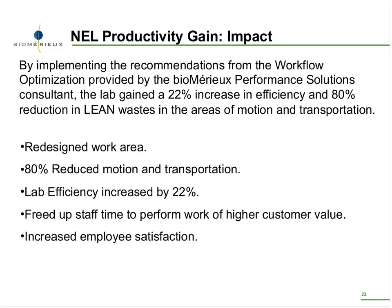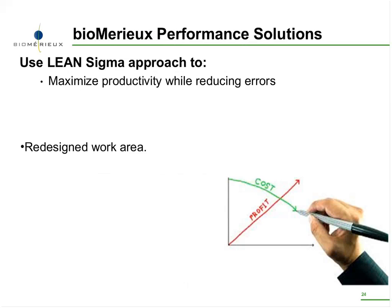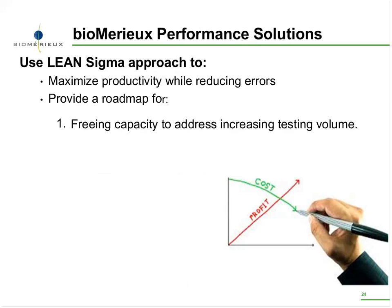When we did a follow-up assessment after a couple of months, we were able to see a 22% increase in efficiency and an 80% reduction in lean waste, specifically in the areas of motion and transportation. There was significant time freed up for staff to perform work of higher customer value. BioMerieux Performance Solutions uses a Lean Six Sigma approach to maximize productivity while reducing errors.